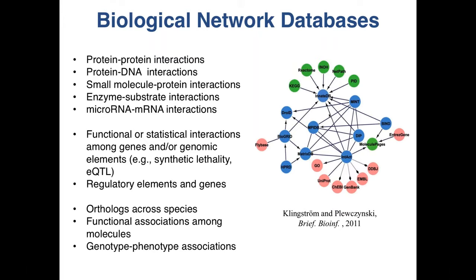Functional interactions between genomic elements — for example synthetic lethality: you knock out one gene and the cell doesn't die; you knock out the other and the cell doesn't die; but when you knock out both, the cell dies. All these functional interactions can be represented as networks. Also, associations — observed and inferred — between different biological entities can be represented as networks. For example, genotype-phenotype associations: if a gene is associated with a particular disease, the OMIM database contains this kind of information and can be thought of as a biological network database. Similarly, functional associations among molecules and evolutionary relationships between genes can all be represented as networks.